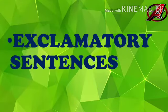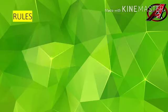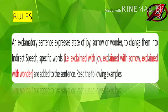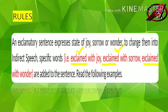Now we'll learn some rules for exclamatory sentences. The first and only rule is: just as in imperative sentences we changed 'said to' into specific words, here also we'll change it into specific words. The word used is 'exclaimed.' If it is joy, we write 'exclaimed with joy.' If it is sorrow, we write 'exclaimed with sorrow.' And if it is wonder, we write 'exclaimed with wonder.'